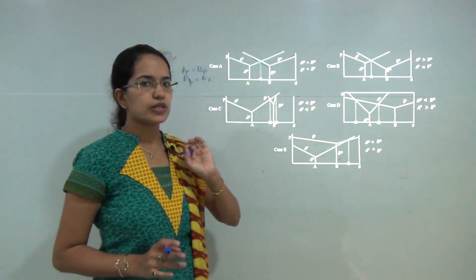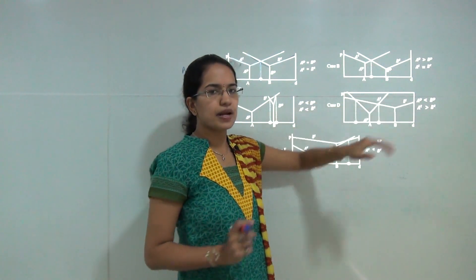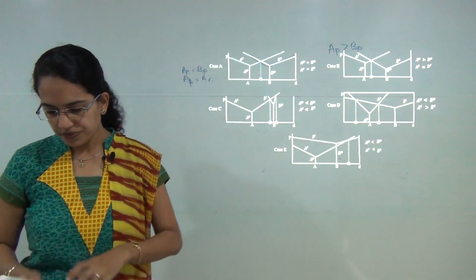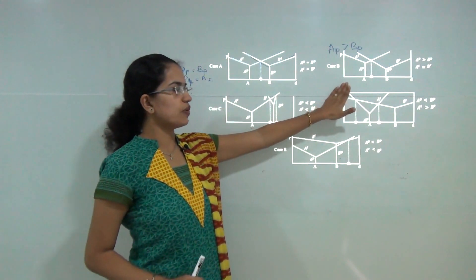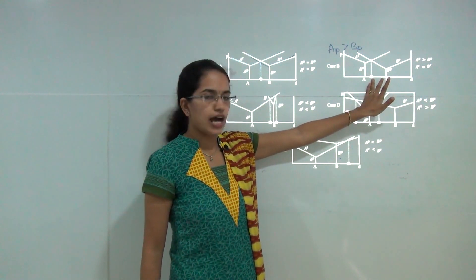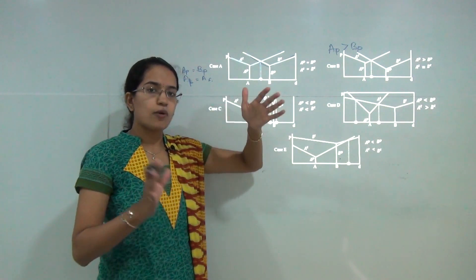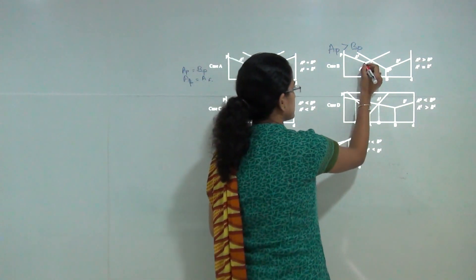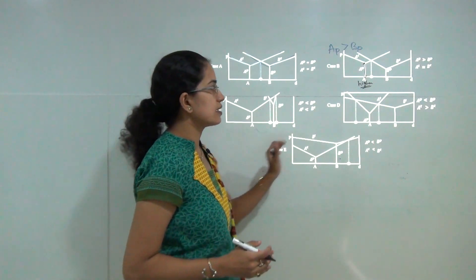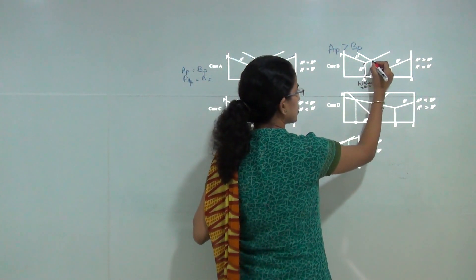Case B is a situation where the price at location A is much higher than at location B, while freight charges remain equal for both. Since A charges a higher price, the market area boundary comes closer to A. Because B charges lower prices, it can extend to a greater distance and accommodate the same total cost that A is charging. So the market boundary would be closer to A.